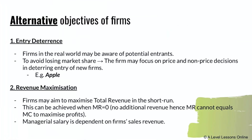Moving on to alternative objectives of firms. Entry deterrence is one of them — firms in the real world may be aware of potential competitors wanting to enter the market. To avoid losing market share, they focus on price and non-price strategies to deter these firms. For example, Apple may pump a lot into advertising to make demand very inelastic, so any new entrant receives zero market share.